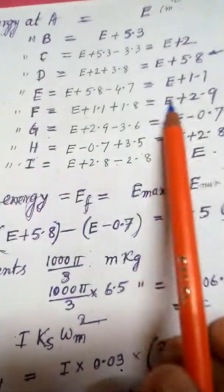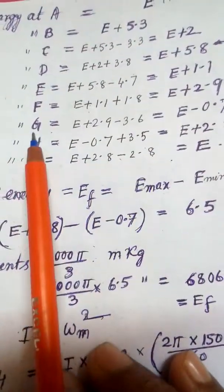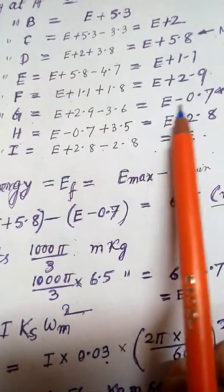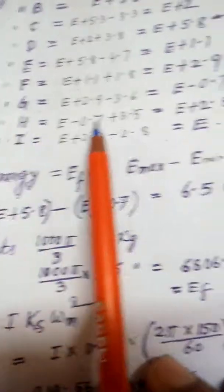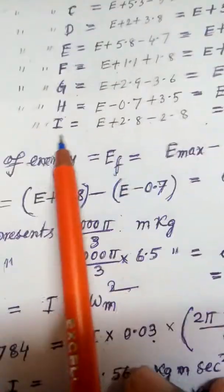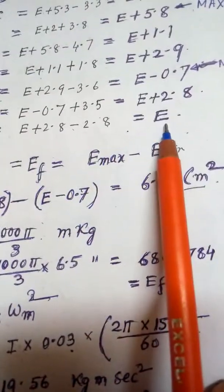G point, G, E minus 0.7. H, E plus 2.8. I, E. So out of all this...